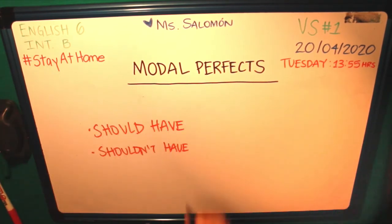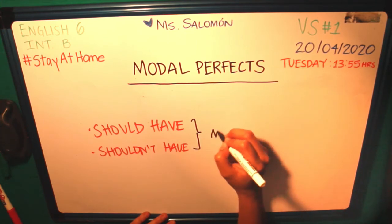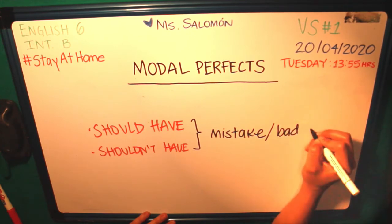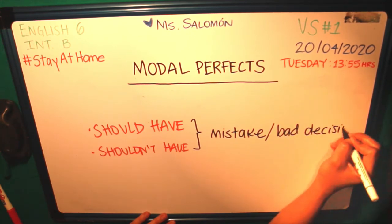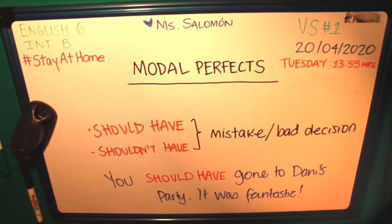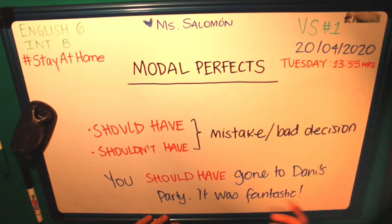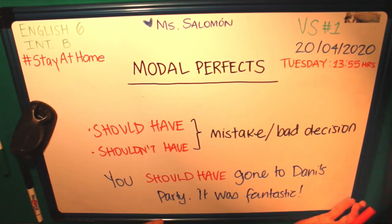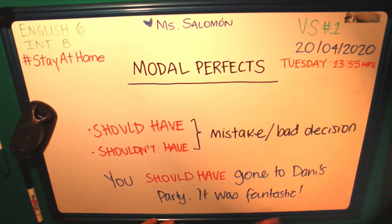Finally, we use 'should have' or 'shouldn't have' to express that we made a mistake or a bad choice or a bad decision. For example, I could say 'You should have gone to Danny's party — it was fantastic.' What I'm saying is that it was a bad decision not to go to Danny's party because it was fabulous. So these are the modal verbs and the structure that we need to follow in order to use modal perfects.